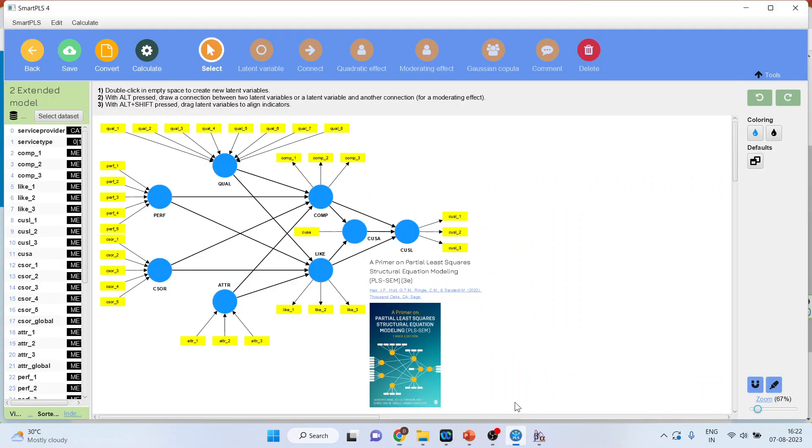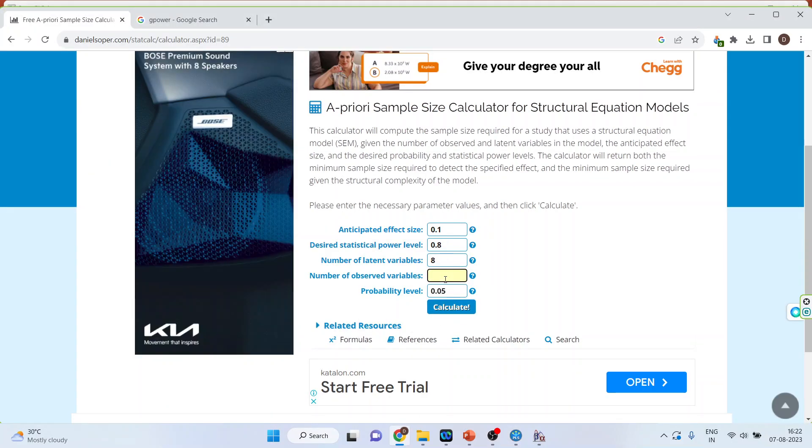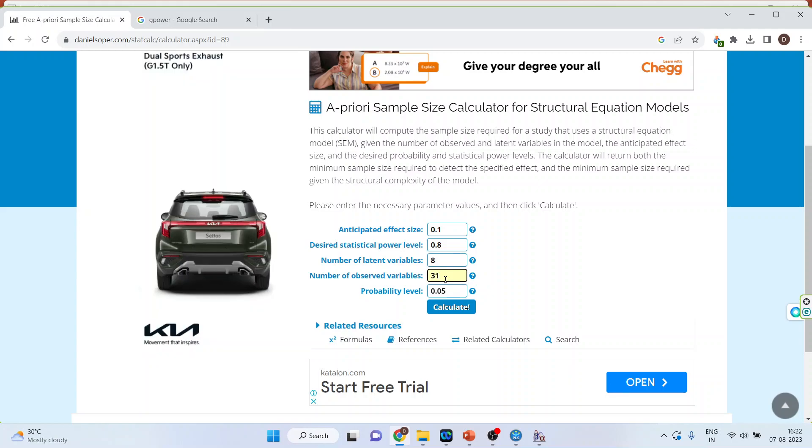Number of observed variables. Observed means the measured variable. We will have to count all the yellow ones. So counting through all the indicators, we get 31 total observed variables. Let's enter 31 here.